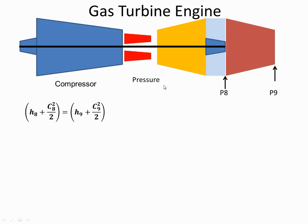I know from the steady state equation that the enthalpy at position 8 plus the kinetic energy at position 8 is equal to the enthalpy at position 9 and the kinetic energy at position 9. I am rearranging that equation, I get an expression for the kinetic energy at 9 which is the nozzle exit.